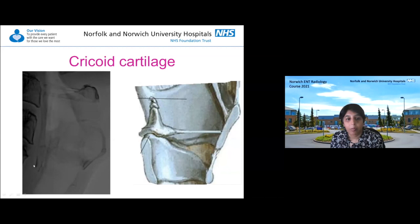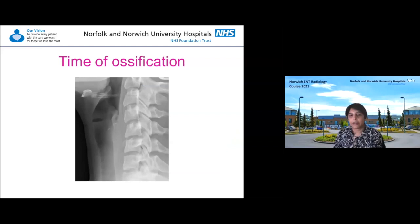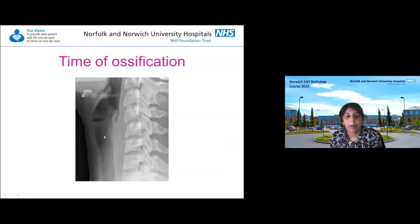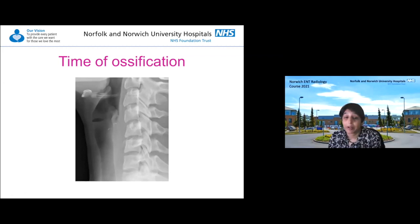This is an 18-year-old girl who swallowed a salmon bone. We can see her hyoid bone and small foci of density in the region of her pharynx, but she hasn't ossified her thyroid or cricoid cartilages. Ossification can vary and may not occur until people are in their thirties, so be aware that things that should be there aren't always there.